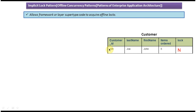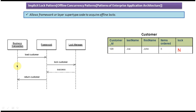This is the important column — lock is null, meaning this record is not obtained by any business transaction or any other session. On the left side you can see a business transaction, a framework, and a lock manager.